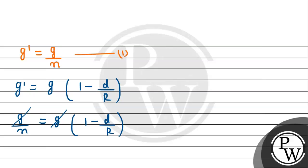That is g by n equals g times 1 minus d divided by R. So g will cancel out. We'll rearrange the values, moving d by R to the other side. So this side becomes 1 by n minus 1, giving us d divided by R equals n minus 1 divided by n.